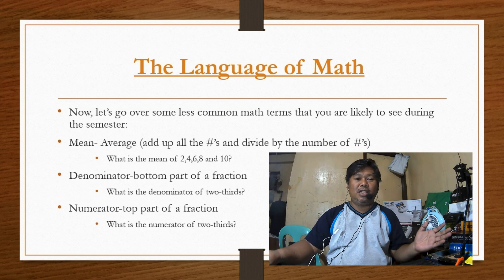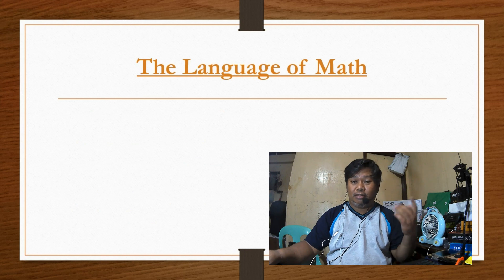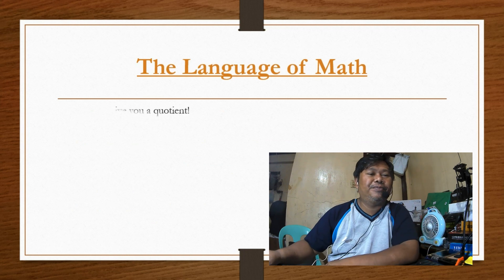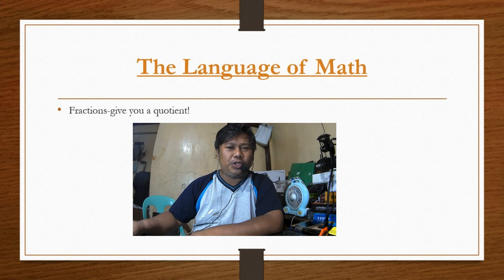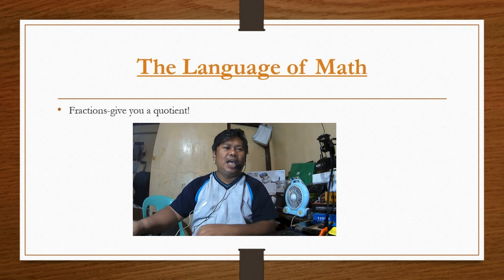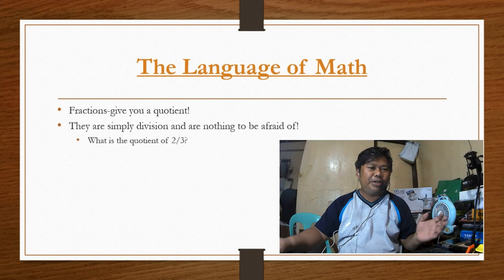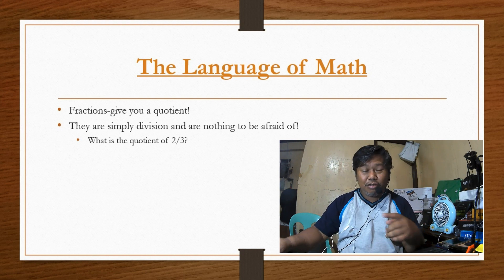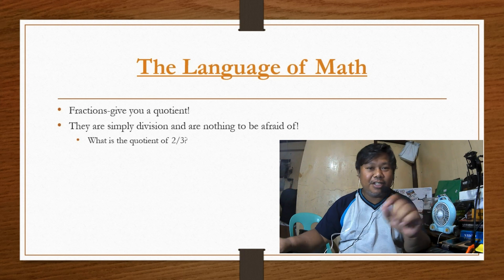So the average will be 30 divided by 6, which equals 5. Denominator is the bottom part of a fraction. For example, the denominator of two-thirds is 3. Don't be afraid of fractions — they simply give you a quotient. They are divisions, nothing to be afraid of. For example, two-thirds means 2 divided by 3.